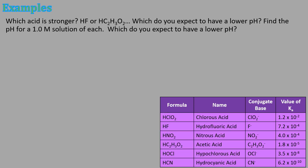Which acid is stronger, HF or acetic acid, and which do you expect to have a lower pH? HF has a larger Ka — its Ka is on the order of 10⁻⁴ versus 10⁻⁵ for acetic acid — so negative 4 is bigger than negative 5. That means HF is stronger and will have a lower pH, since stronger acids have lower pH values.